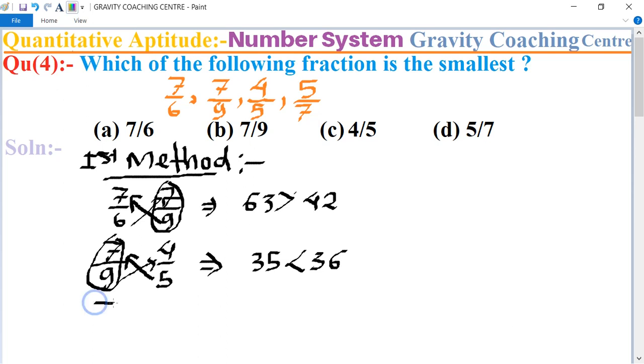Now 7 by 9 compare with 5 upon 7. So again cross multiplication. 7 times 7 is 49 and 9 times 5 is 45. So 45 is greater, that means 5 by 7 is the smaller one. So 5 by 7 is the answer.